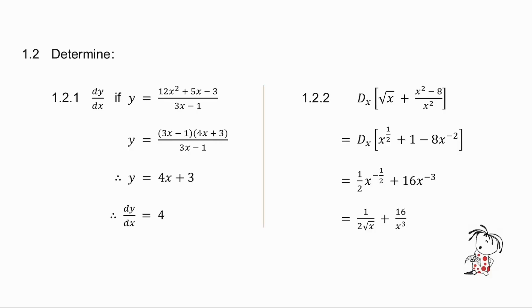1.2.2, remember a square root can be written as x to the half. I divide x squared into each of the terms on the top, and then I take the derivative. Derivative of x to the half is there, remember the derivative of a constant is 0, and the derivative of that term is there, and then all I do is I sort out the negative exponents.